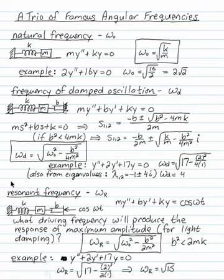Finally, what happens if you have damped oscillation that's being driven by a driving force with a frequency of omega? What driving frequency, what omega would produce the response of maximum amplitude? That's a famous frequency, that's called the resonant frequency. You'll get the maximum response from the system for light damping. You have to say b squared is less than 2mk.